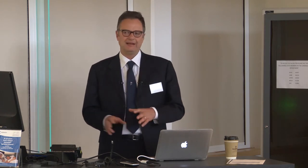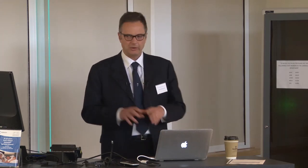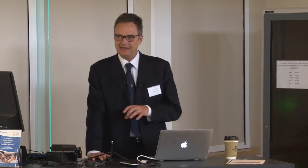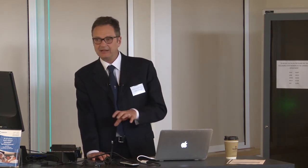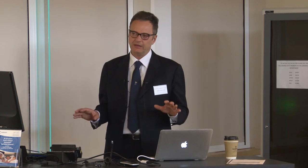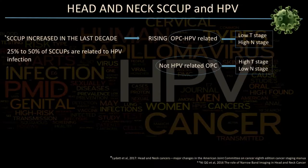If the bioendoscopy in the office is negative, we repeat the procedure in the OR under general anesthesia with a rigid endoscope and perform a biopsy. If no suspicious area is found even in the OR, we perform mucosectomy of the base of the tongue and tonsillectomy to obtain histological confirmation of whether it is truly an unknown primary or if a primary is found.